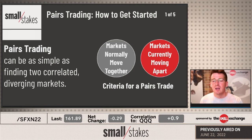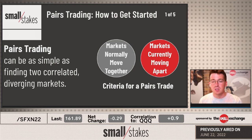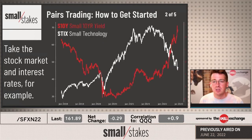You can do this by running correlations at home or using a platform that compares markets via correlation. A correlation number of positive 0.5 or above means they tend to move together. Then all you have to do is compare them in your charting package to see — are these things moving apart? You can also just lean on some well-known historical relationships.